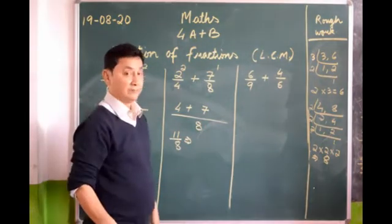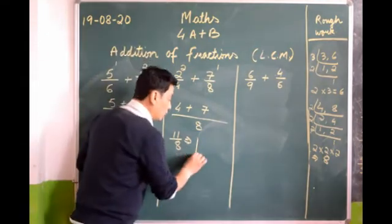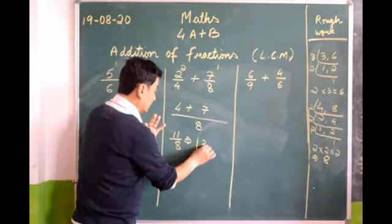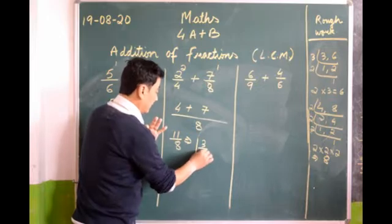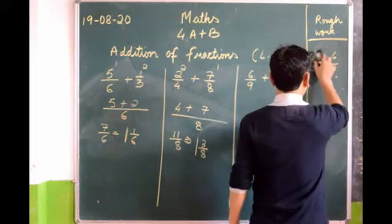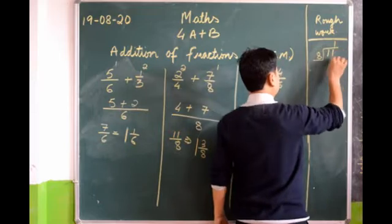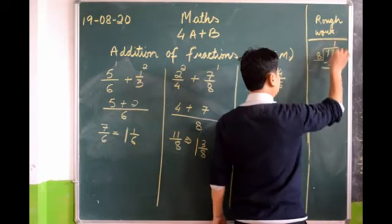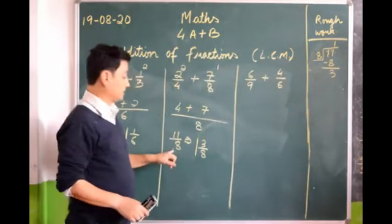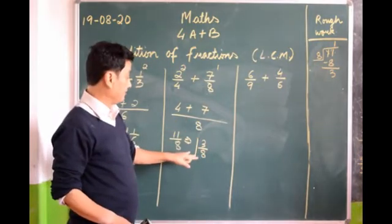Let's do the conversion mentally because it is a small sum. 8 goes into 11 one time: 8 ones are 8, and 11 minus 8 leaves remainder 3. So the answer is 1 and 3/8. For those who find it puzzling, let's divide it out: 28 divided by 8... actually 11 divided by 8 — 8 ones are 8, remainder 3. So the answer is 1 and 3/8.